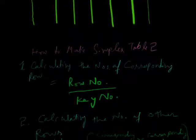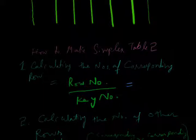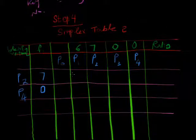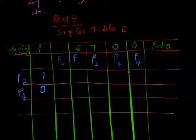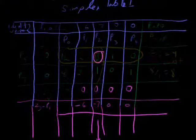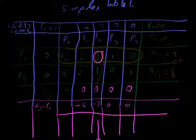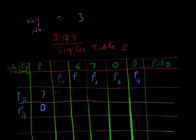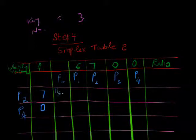Row number divide key numbers. Suppose for P0, our row number is 12 and key number is 3. Then we write here 12 divide 3 is equal to 4.